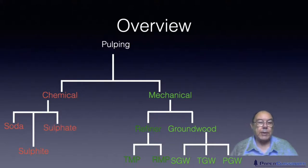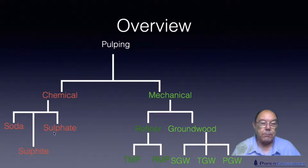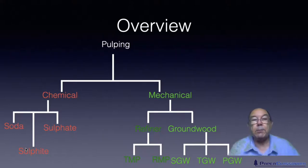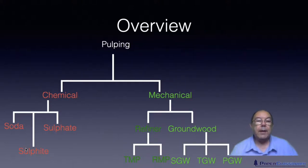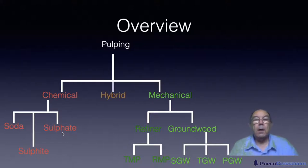Following the sulfite process, the sulfate process was invented by a German chemist. The paper made with his process was much stronger than paper made from the sulfite process, so he called his process the 'strong process' — and the German word for strong is 'Kraft.' That's why we hear so often about Kraft pulps and Kraft paper. Around 95% of all chemical pulping done today uses the sulfate process.